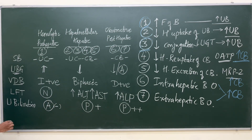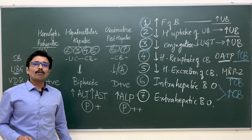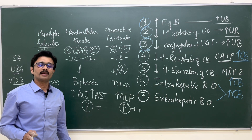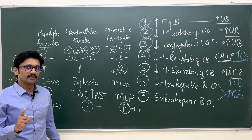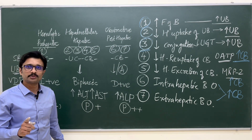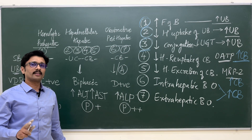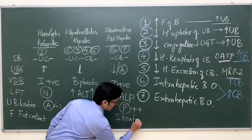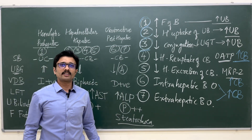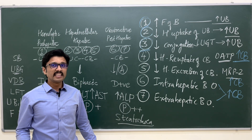Lastly, what happens to the stool fat content — the fecal fat content? Fats are absorbed from the intestine by the role of bile salts, which break down fats into fatty acids that are then absorbed. If there is absence of bile within the intestine, fat absorption is impaired. In case of obstructive jaundice, when there is no bile and no bile salts within the intestine, fat absorption is impaired and there is more fat in the fecal content — this is called steatorrhea. The stools will be very bulky, foul-smelling, greasy, and clay-colored.